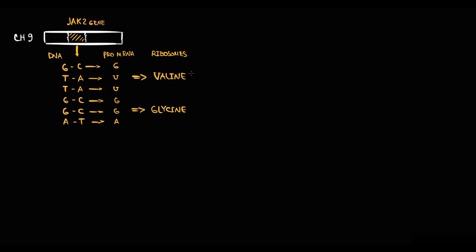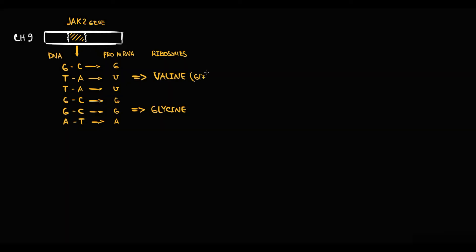Let's suppose that valine is the amino acid in 617 position. A particular amount of amino acids form a protein. In our case, this protein is JAK2 kinase. The function of JAK2 kinase is to activate cellular pathways that are responsible for cellular proliferation.